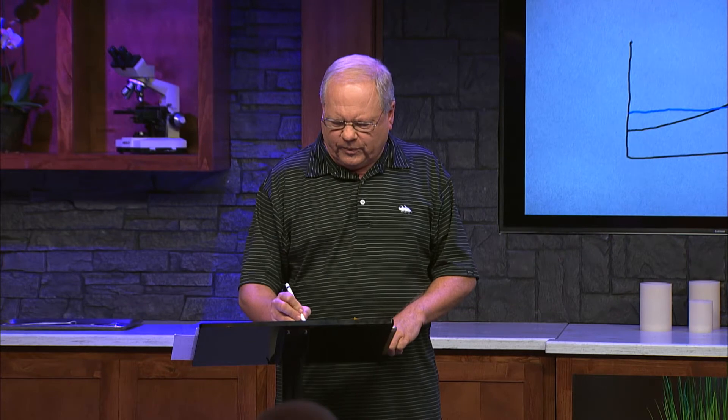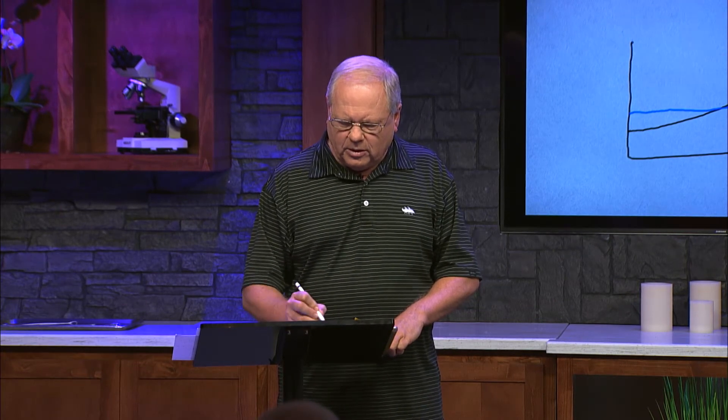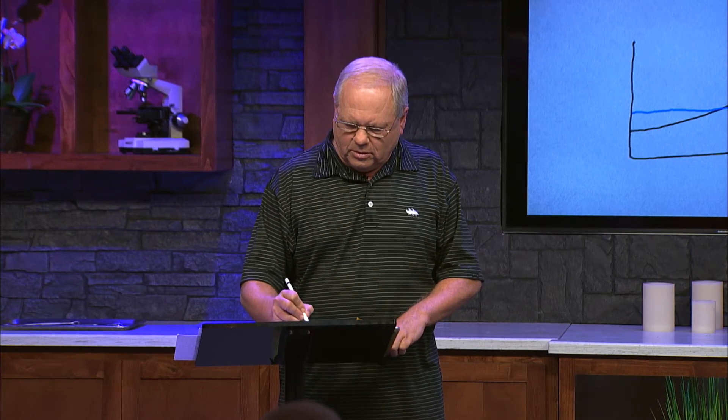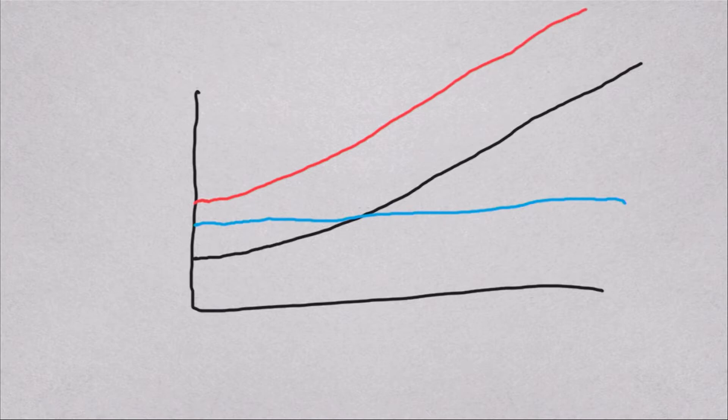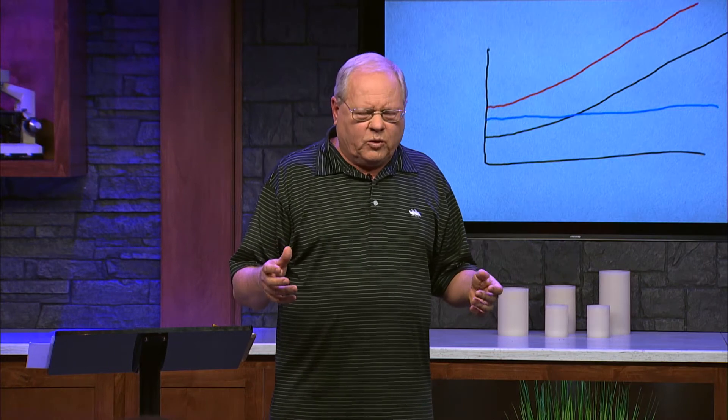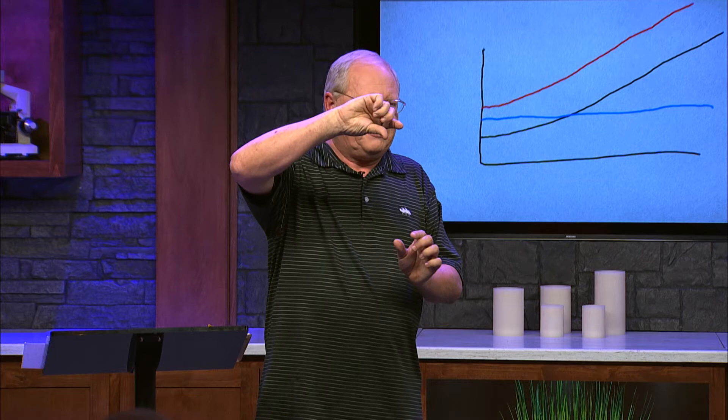What does correlate with obesity is sugar consumption — this increase in obesity parallels the increase in sugar consumption in the country. A good example is sodas. Sodas and other sugar drinks are one of the main places where you find sugar coming in. Remember when Coca-Cola first came out in that cute shaped bottle? You know how big it was? Six and a half ounces — that was the serving size back then.